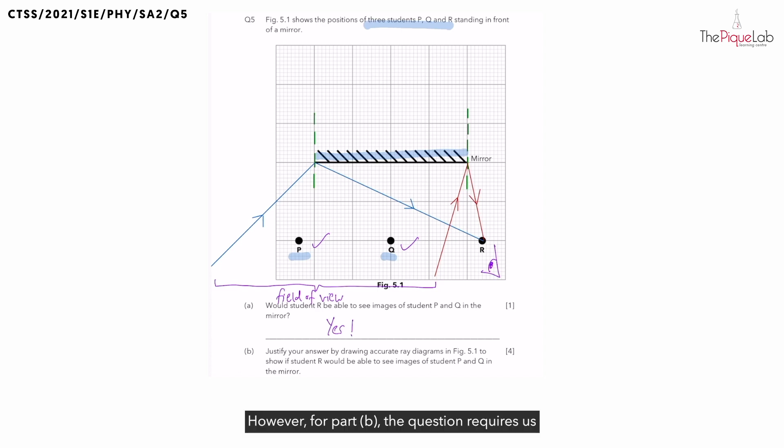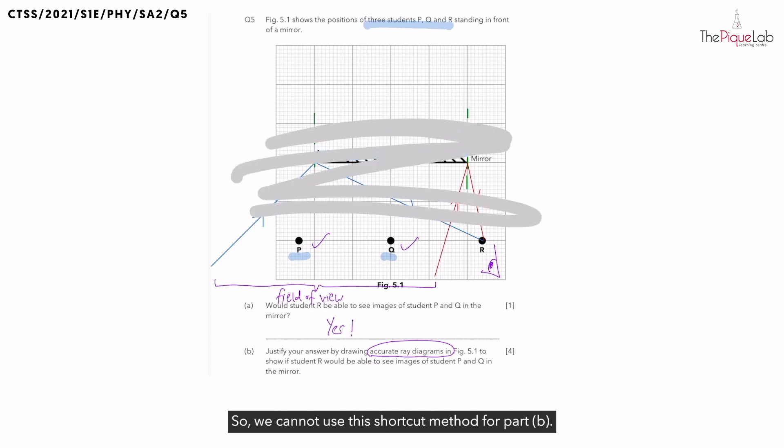However, for part B, the question requires us to draw an accurate ray diagram, enabling R to see the images of P and Q. So we cannot use this shortcut method for part B.